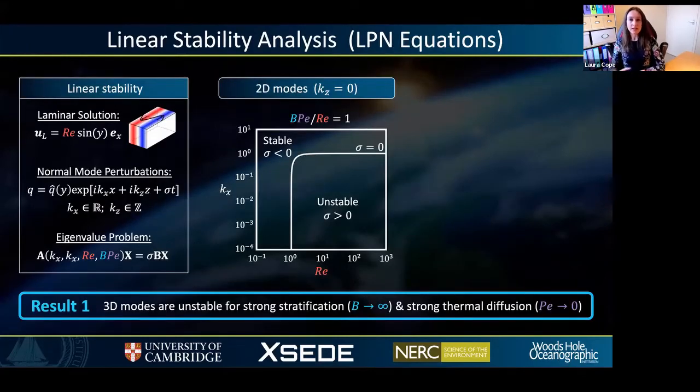To begin our analysis, we're going to consider the linear stability of the low Péclet number equations about the laminar background state, i.e., this sinusoidally varying velocity profile. In the usual fashion, we're going to consider normal mode perturbations away from the laminar solution, where q represents a dynamical variable such as a component of the velocity field. These perturbations have streamwise wave numbers given by kx, vertical wave numbers given by kz, and their growth rates are given by sigma. If we substitute these perturbations into the equations of motion, then we can derive an eigenvalue problem for the growth rates sigma, and we can solve this problem numerically.